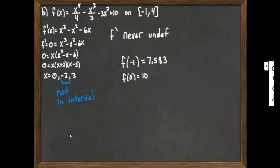Plug in 0, that's easy, we get 10. Plug in +3, we get -5.75. We'll evaluate that. And plug in 4, and we get 4.67.